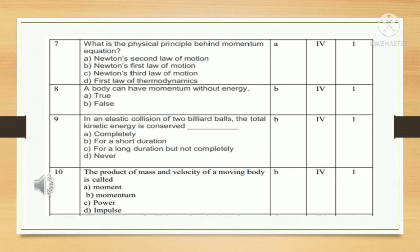The product of mass and velocity of a moving body is called. Answer is B: momentum.